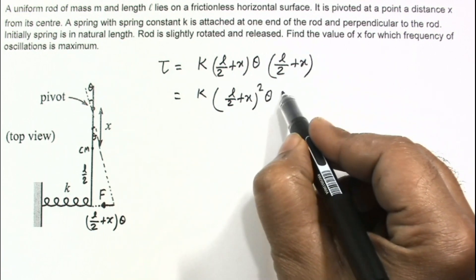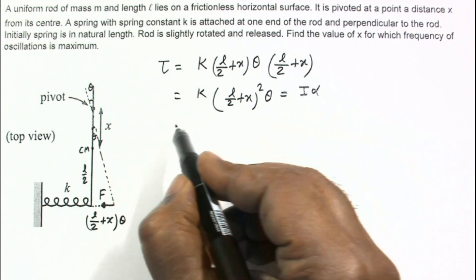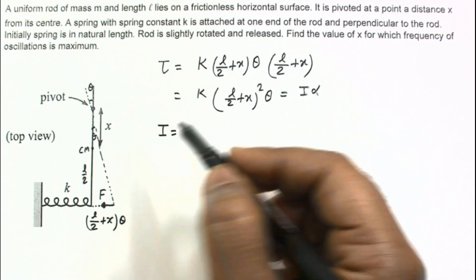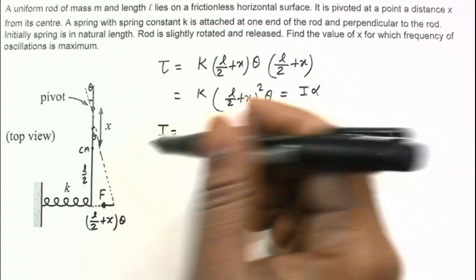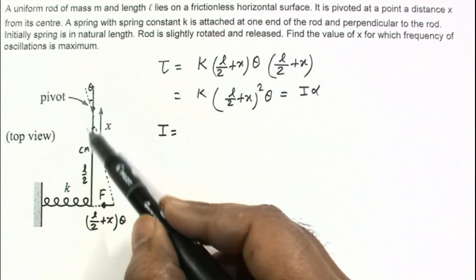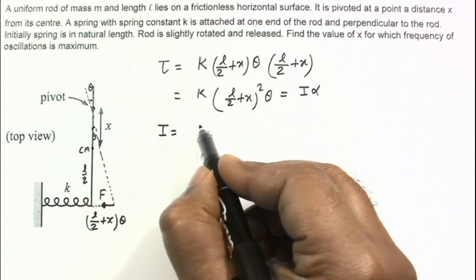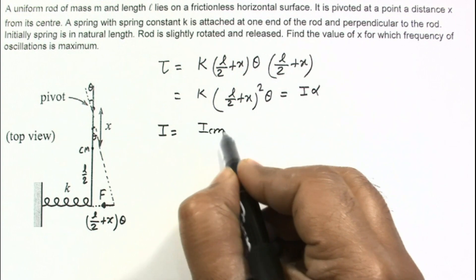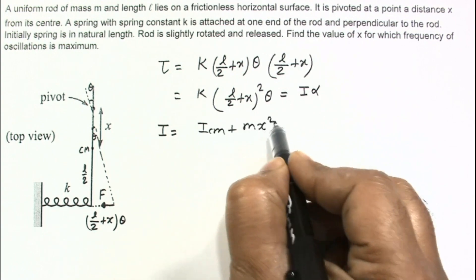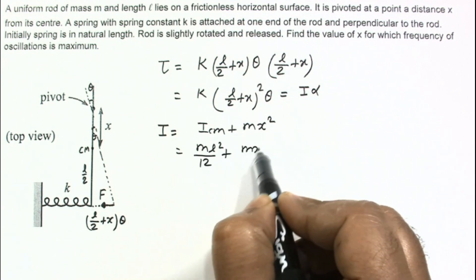And this torque we can write as I times alpha. And moment of inertia for this rod will be, so moment of inertia about center of mass is ML squared by 12. And this is the axis which is at a distance x from center of mass. By parallel axis theorem we can write I_CM plus MX squared, which is ML squared by 12 plus MX squared.